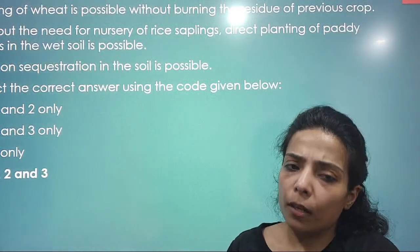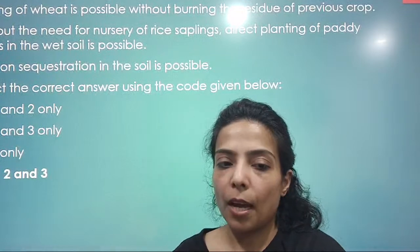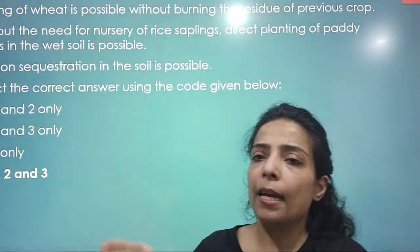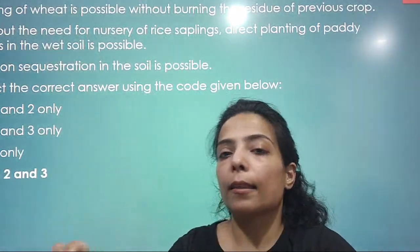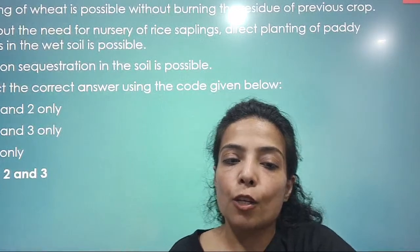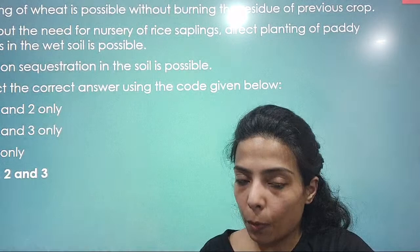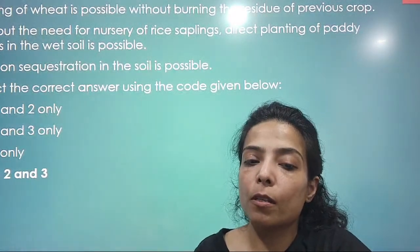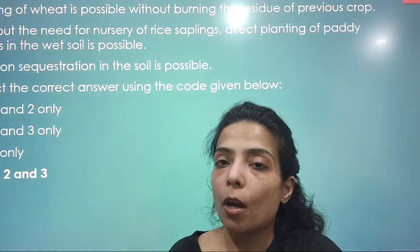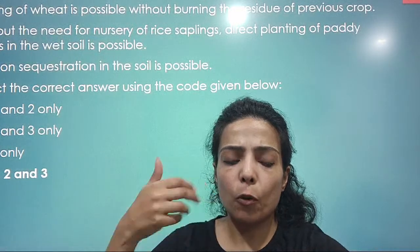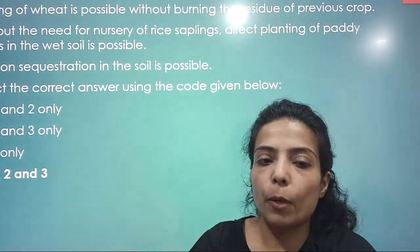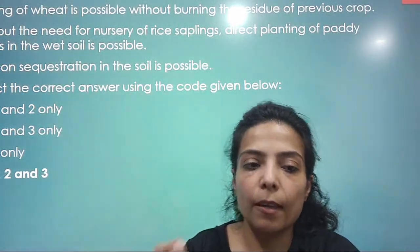What are the advantages of zero tillage in agriculture? Zero tillage means sowing seeds without prior land preparation. Sowing of wheat is possible without burning the residue of the previous crop — that is possible. Without the need for nursery of rice saplings, direct planting of paddy seeds in wet soil is possible — true. Carbon sequestration in the soil is possible — true. This is about mulching: instead of stubble burning, you mulch it into the soil, which sequesters carbon. So all three are correct.